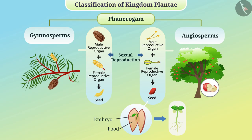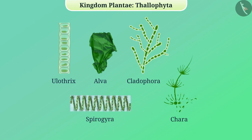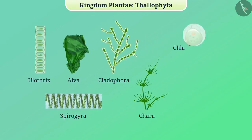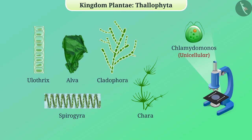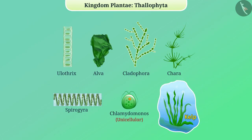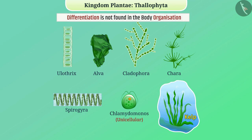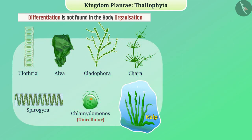Let's talk about Thallophyta in detail. Plants like Ulothrix, Ulva, Cladophora, Spirogyra, Chara, etc. are included in this class. Their size varies — some organisms such as Chlamydomonas are unicellular and require a microscope to view, whereas some such as kelp are very large. Differentiation is not found in their body organization; parts like roots, stem, and leaf are not developed. All plants in this group are commonly called algae.